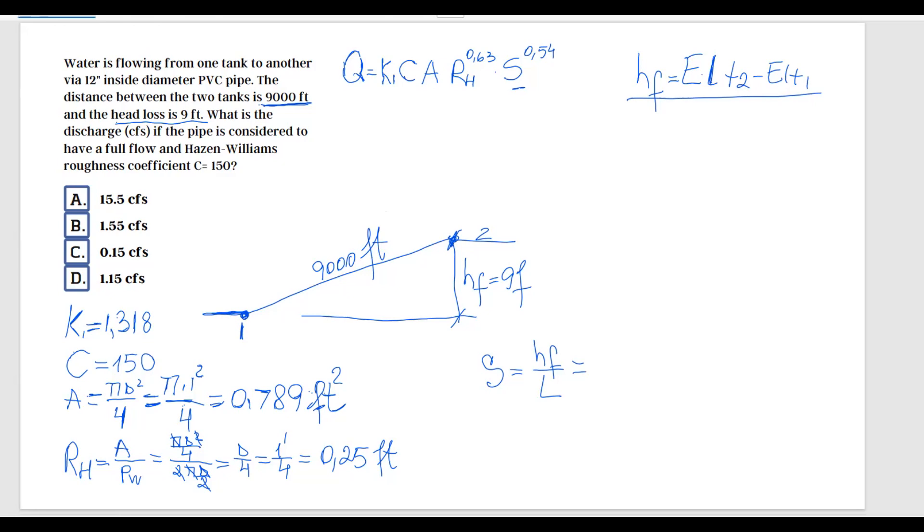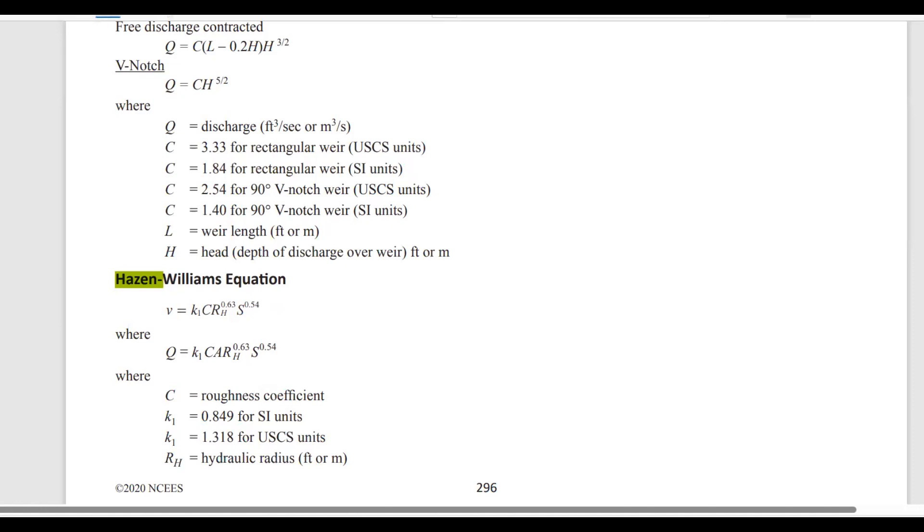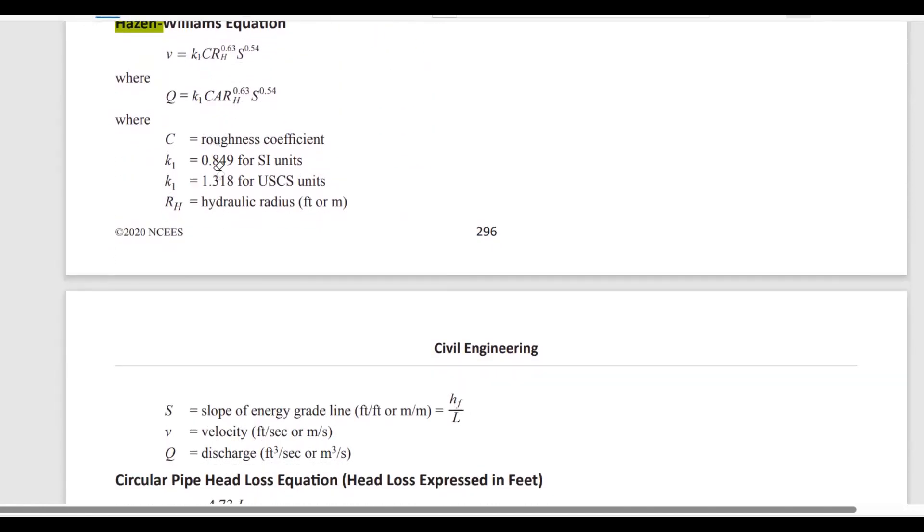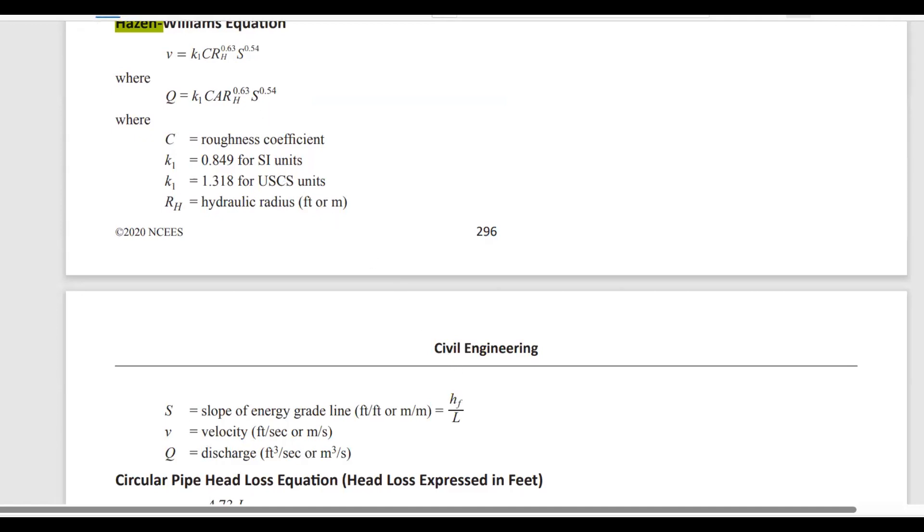Interestingly enough, this formula actually is given in the FE handbook. Let's go back to the FE handbook. Let's say you don't know how you can use the head loss and the length to solve the problem. Here, right after the Hazen-Williams equation, you're told that the slope is the head loss—which is the static head loss, the difference in elevation—divided by the distance between the two tanks. So now that we know that, we can come back here and I'm going to substitute: 9 feet divided by 9,000 feet, which equals 0.001.